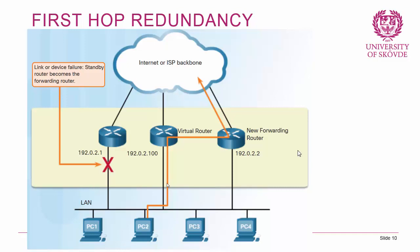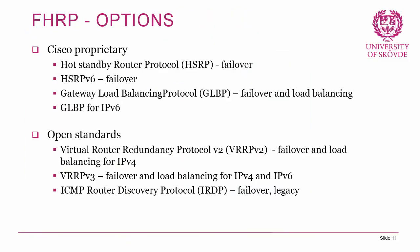There are several first hop redundancy protocols. Cisco proprietary options include: Hot Standby Router Protocol (HSRP), used in this course — failover only; HSRP version 6 for IPv6; and Gateway Load Balancing Protocol (GLBP), which provides both failover and load balancing. GLBP is useful because instead of one standby router sitting idle, two or more routers actively share the forwarding duties.